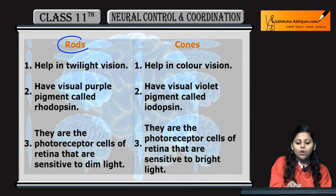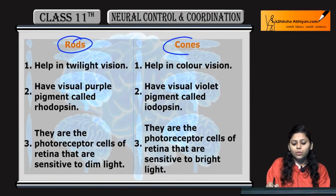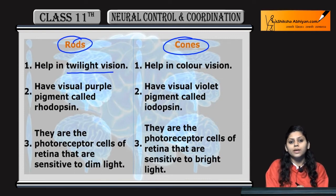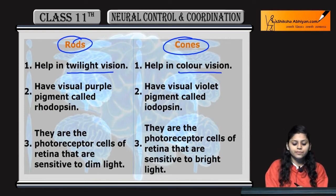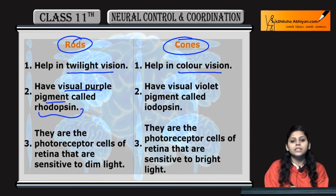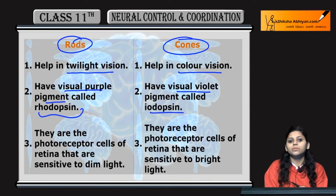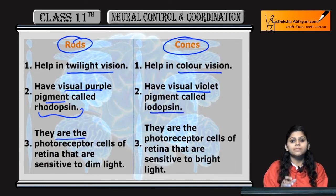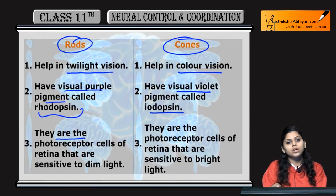Point 12: Next is rods and cones. Rods are responsible for twilight vision and cones are for color vision. Visual purple pigment is rhodopsin in case of rods. Visual violet pigment, that is iodopsin, is in cones. They are photoreceptor cells — rods are photoreceptor cells and cones are also photoreceptor cells.